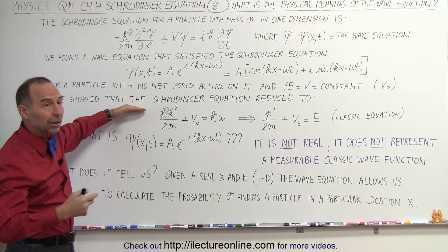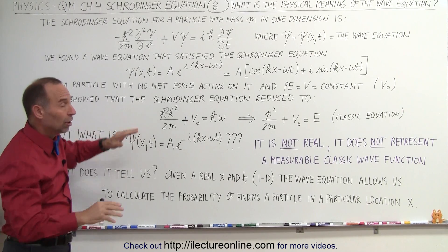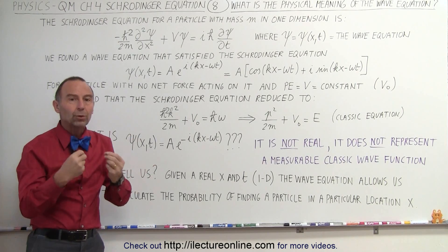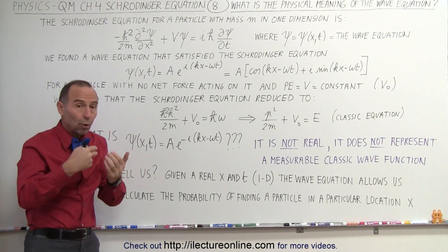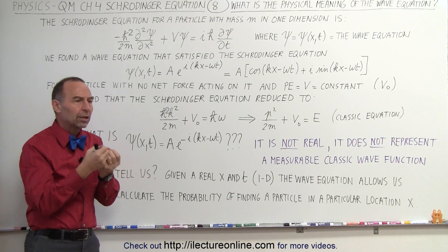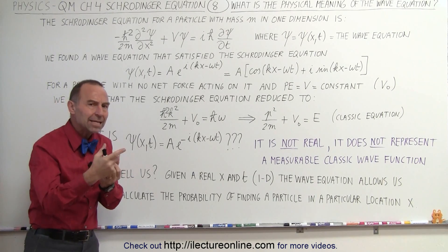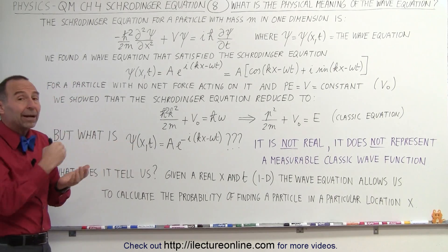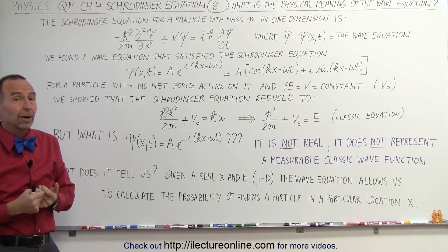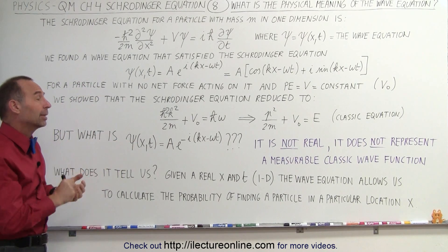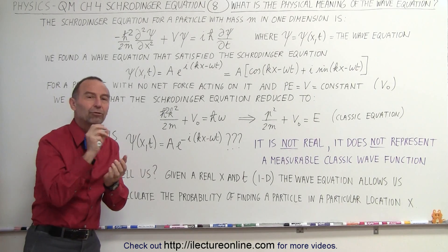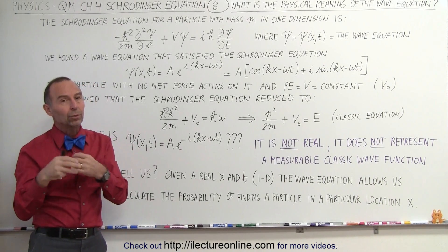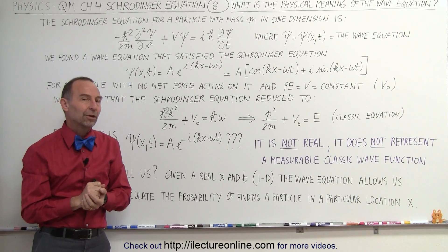The wave equation that we use in quantum mechanics does not represent a real wave. It does not represent a real quantity. It only allows us to come up with a means, because in and by itself it also doesn't tell us the probability of finding a particle in a particular location. It just allows us a means of doing so, and the technique will be explained in the next several videos.